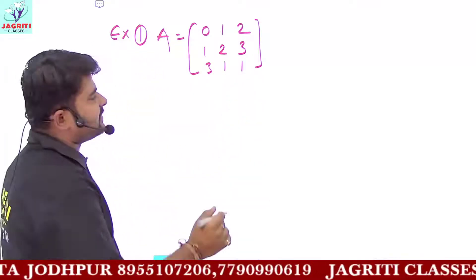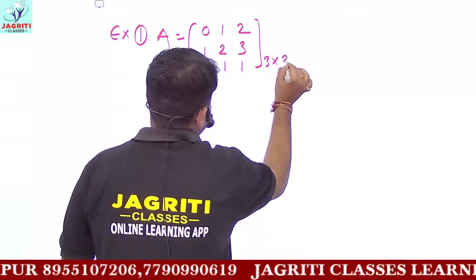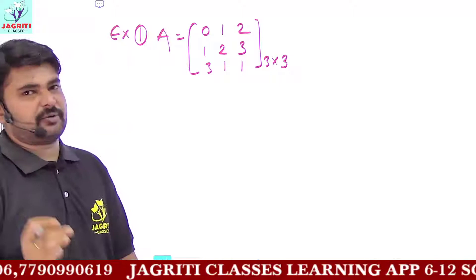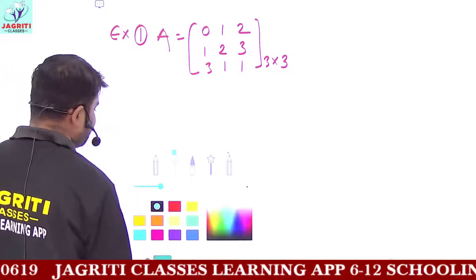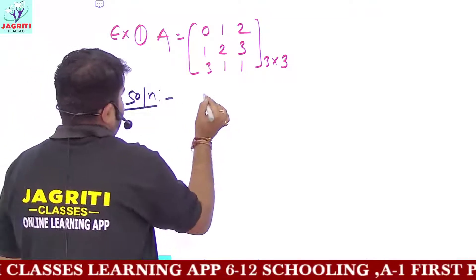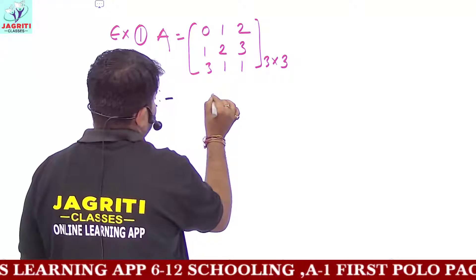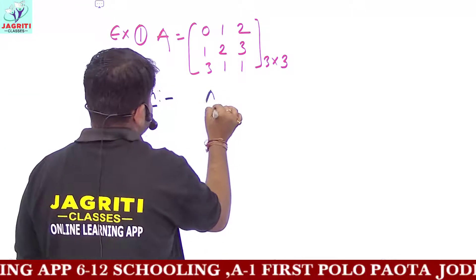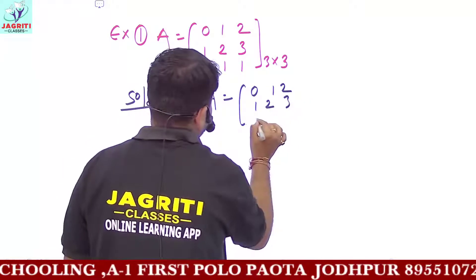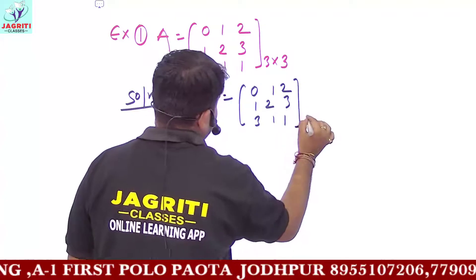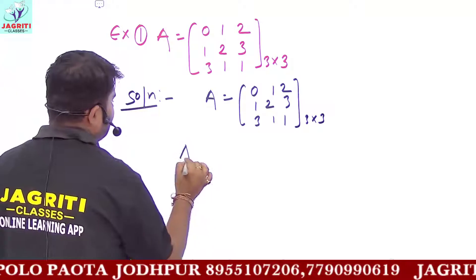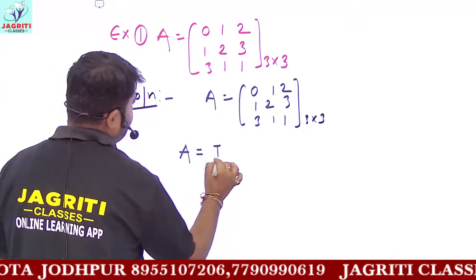Now we have a 3 by 3 order matrix. We have to find the inverse using elementary operations. So to find the inverse, we write A = I · A, where A given is [0, 1, 2; 1, 2, 3; 3, 1, 1]. That is a 3 by 3 order matrix.